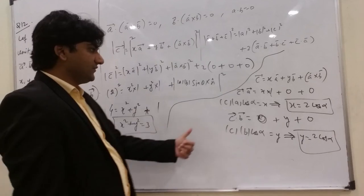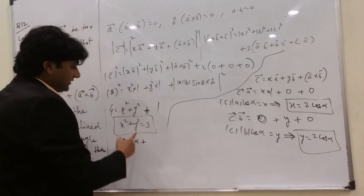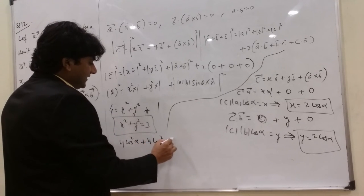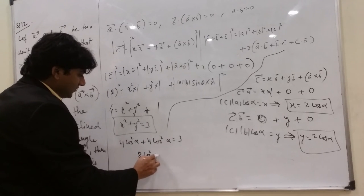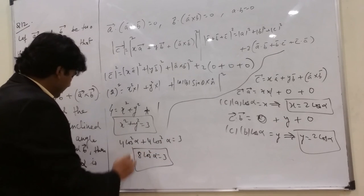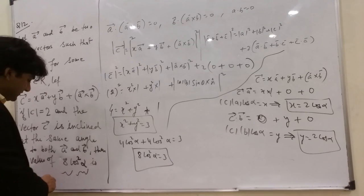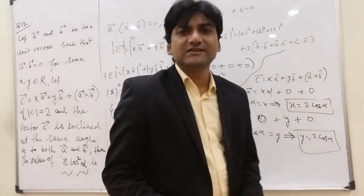Now put those two things over here. 2 cos alpha whole square, which is 4 cos square alpha. Then y square again, 4 cos square alpha equals 3. So this is 8 cos square alpha equals 3. Question was, find the value of 8 cos square alpha. So 8 cos square alpha is 3. So it is pretty simple.